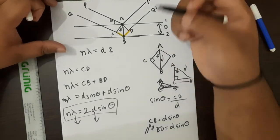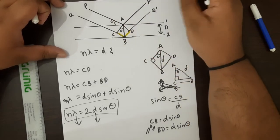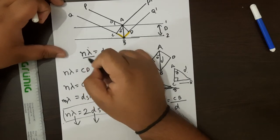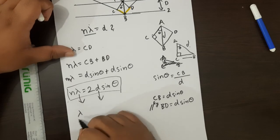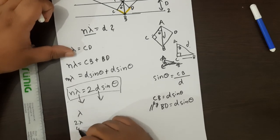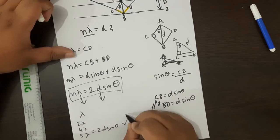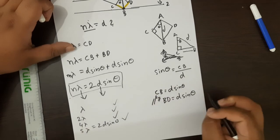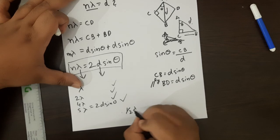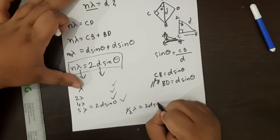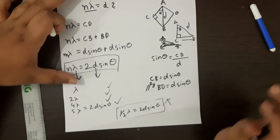To summarize: if the extra distance covered by the two light waves is some integral multiple of the wavelength of light, we get constructive interference. So if lambda, 2·lambda, 4·lambda, or 5·lambda equals 2D·sine(theta), we get constructive interference in all those conditions. But if half·lambda equals 2D·sine(theta), we won't get any constructive output — it becomes destructive interference.